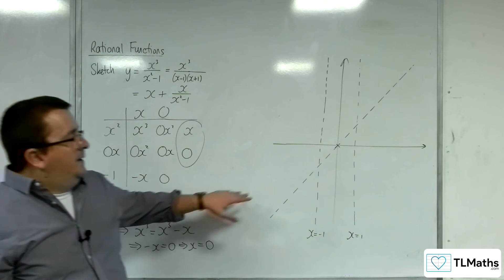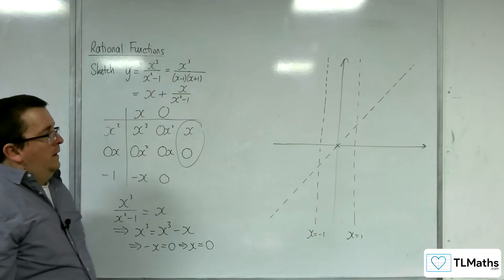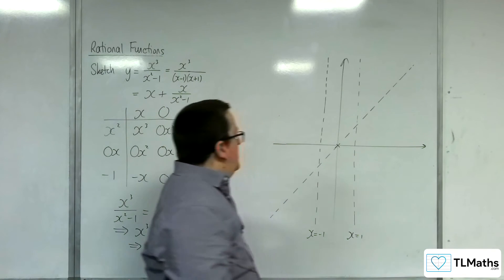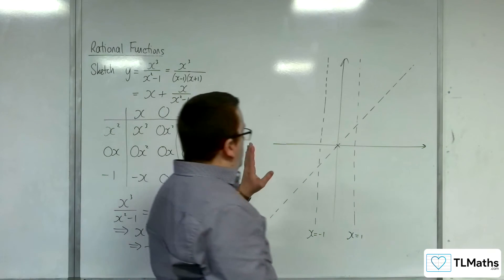But you've always got to check that in case the curve crosses at any other point as well. Next up we need to figure out what's going on in the different regions, because we've got three separate bits.